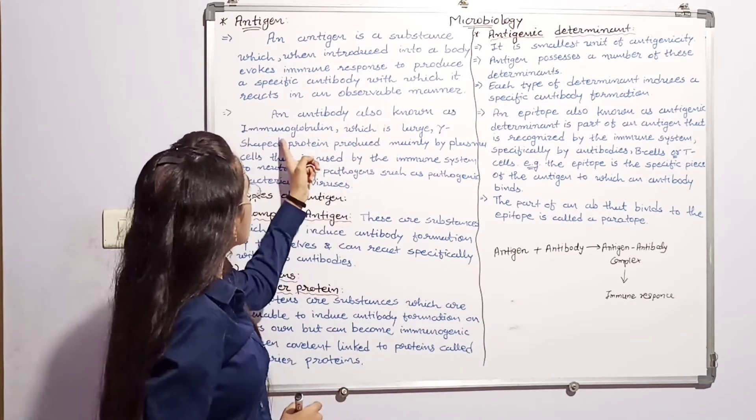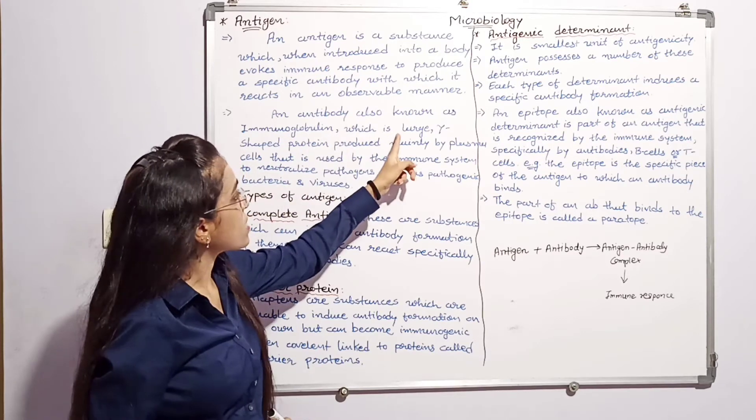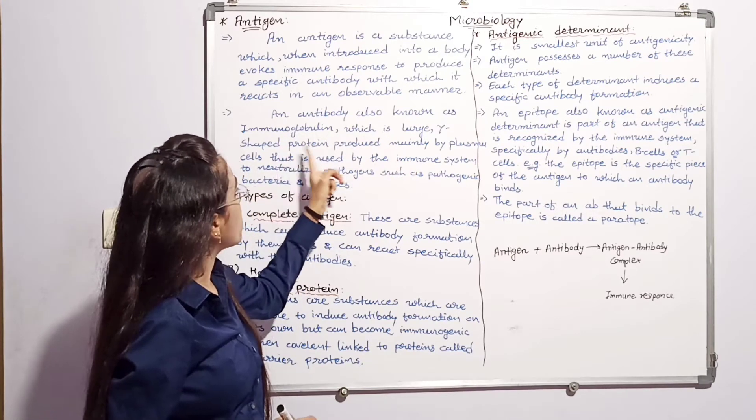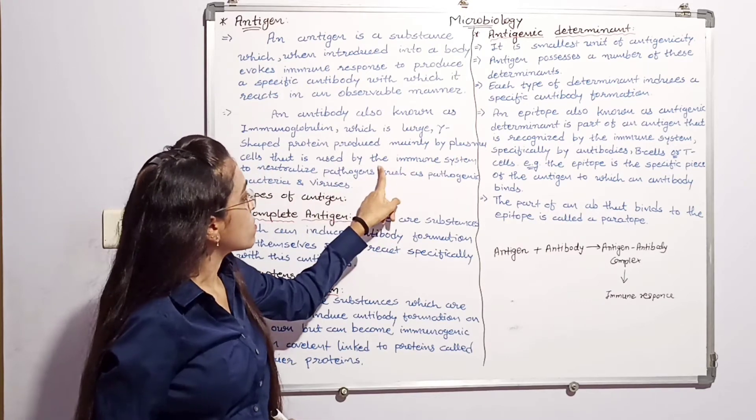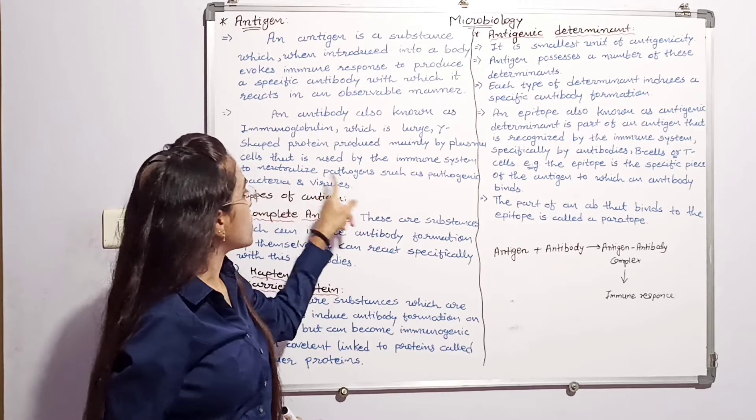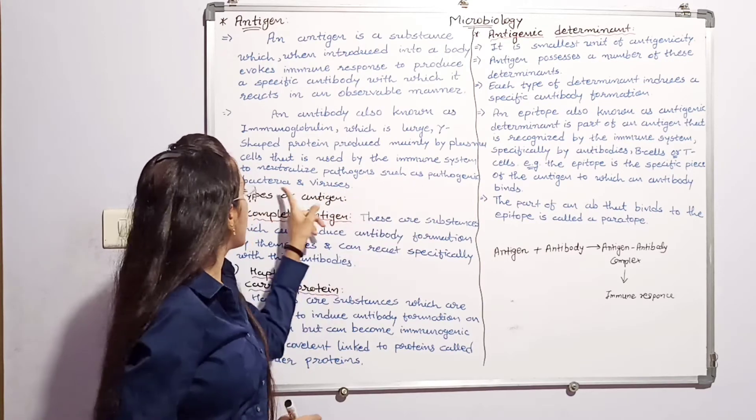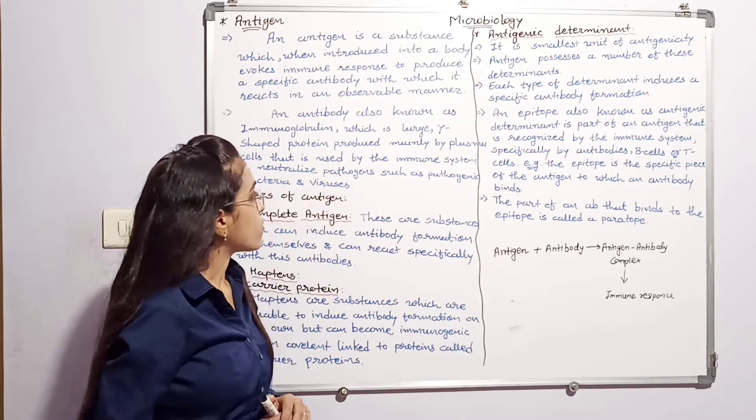Antibody is also known as immunoglobulin, which is a large Y-shaped protein produced mainly by plasma cells that is used by immune system to neutralize pathogen such as pathogenic bacteria and virus.